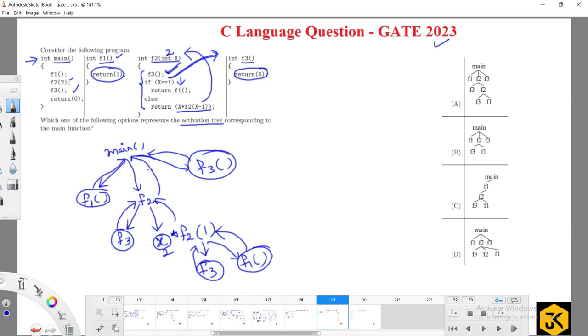It comes back. This is the corresponding activation tree for the given code. You can simply check with this diagram whichever option is matched - that is our correct answer. You have to choose the best one.